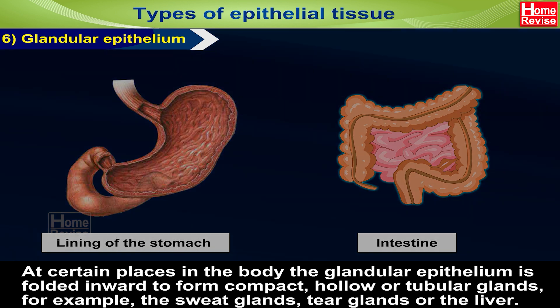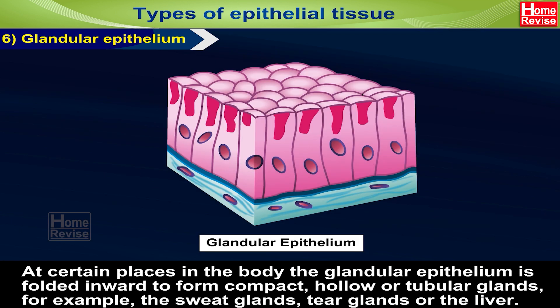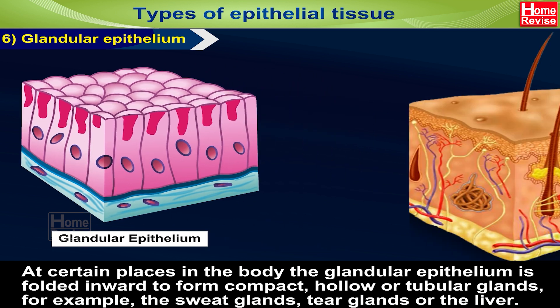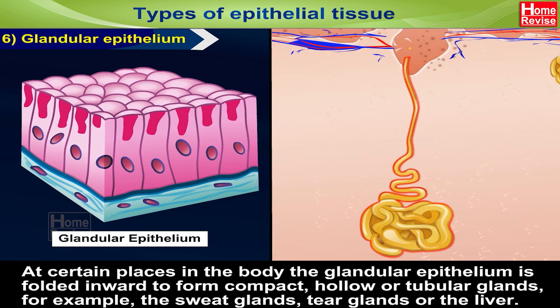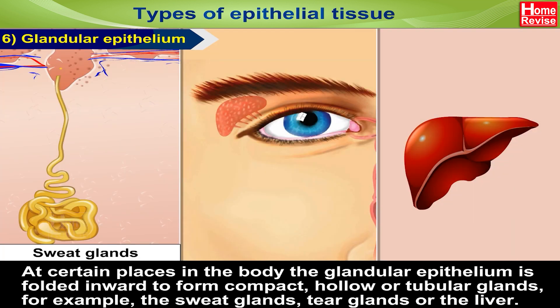At certain places in the body, the glandular epithelium is folded inward to form compact, hollow or tubular glands — for example, the sweat glands, tear glands or the liver.